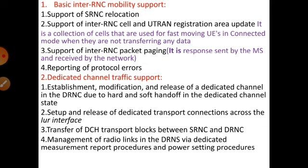This registration area update activity is used for fast-moving user equipment, not slow-moving. When you go to update the registration area, there should be no ongoing data transfer activity in the particular network — if data transfer is going on, you cannot perform the update. Third is support of inter-RNC packet paging — packet paging is a response sent by the mobile station and received by the network. Fourth is reporting of protocol errors: if any error occurs in the mobile station, user equipment, or base station, this function is used to report those protocol errors.